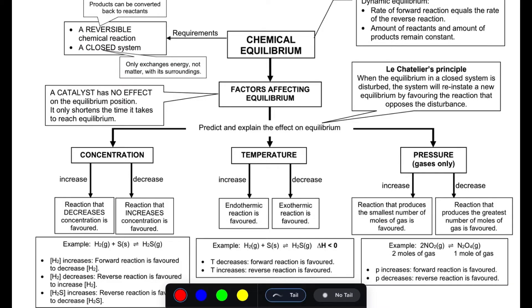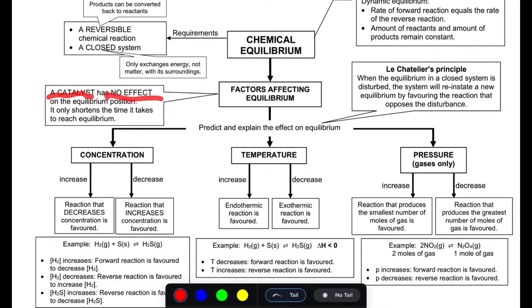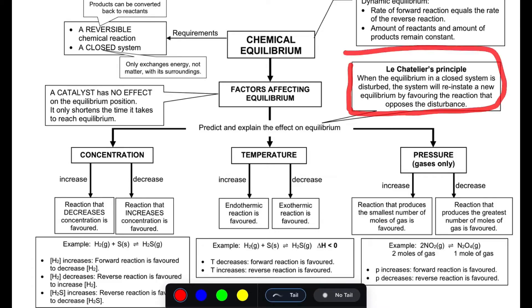There are factors that affect chemical equilibrium, but the catalyst has no effect on the equilibrium position — it doesn't shift it forward or backward. What the catalyst does is shorten the time it takes to reach equilibrium, which means it speeds up the reaction.